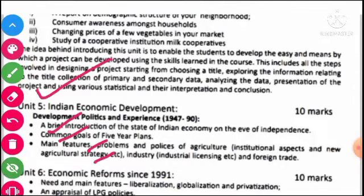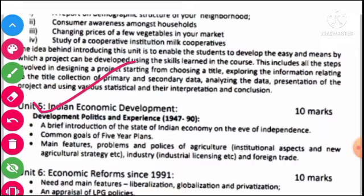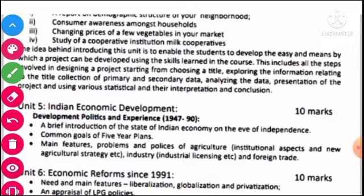जो हमारा 5th Unit है, वो है Indian Economic Development — यह 10 marks का unit है। इसमें हम discuss करेंगे: Development Policies and Experience 1947 to 1990, A Brief Introduction of the State of Indian Economy on the Eve of Independence — जब 1947 में independence मिली तो economy कैसी थी। फिर Common Goals of Five-Year Plans, Main Features, Problems and Policies of Agriculture, Institutional Aspects, Agriculture Strategies, Industrial Licensing और Foreign Trade।